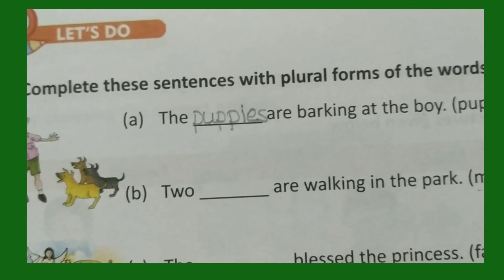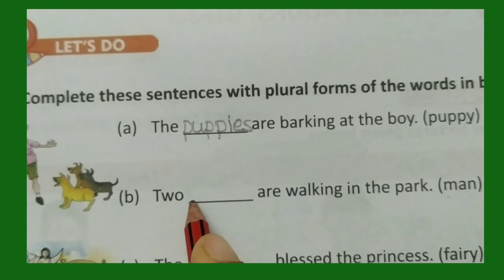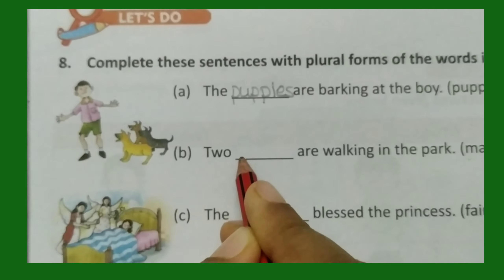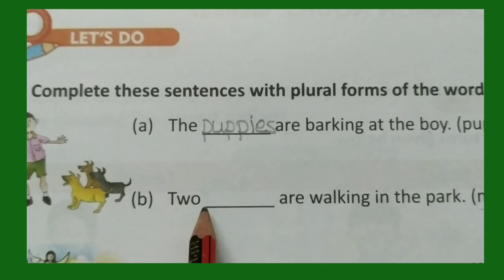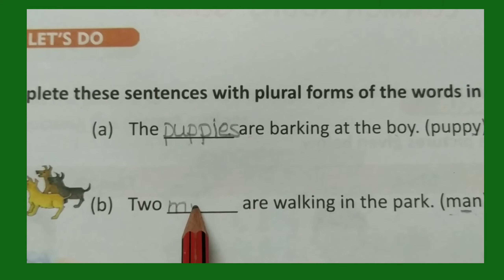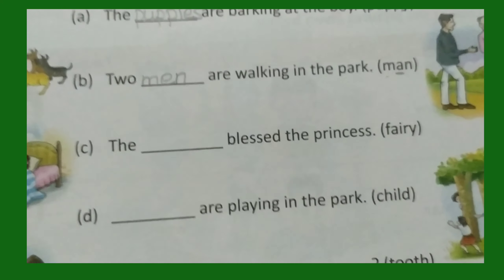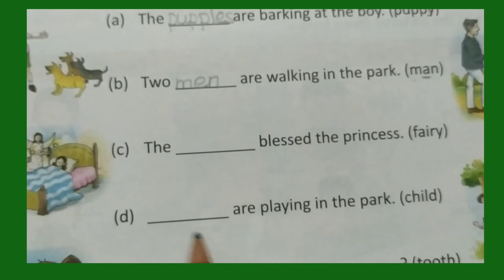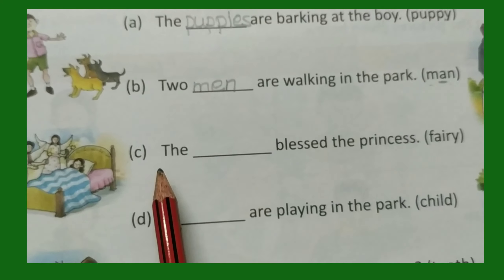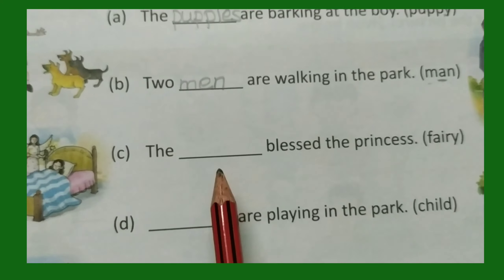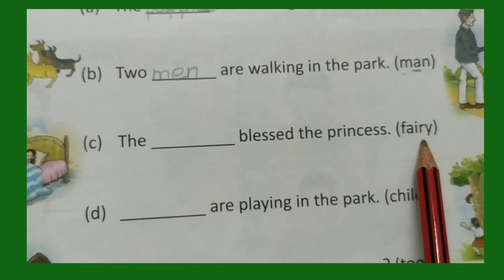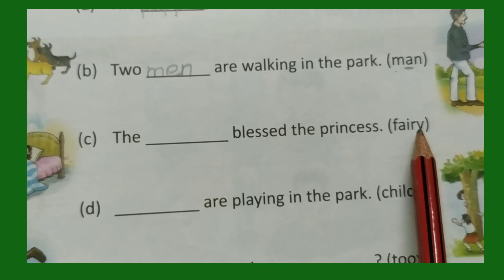For b, two dash are walking in the park — the word is man. The plural form of man: we change the inside letter a and write m-e-n: men. Two men are walking in the park.